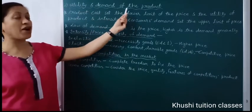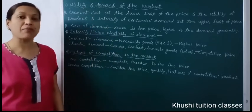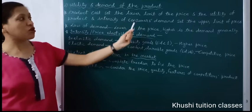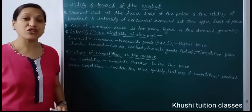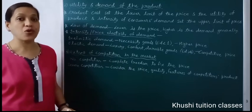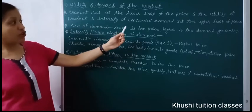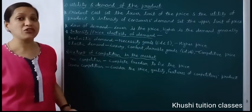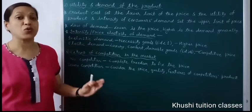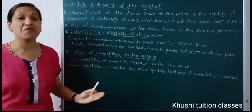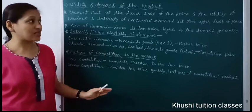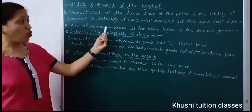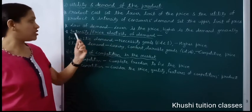The second factor is utility and demand of the product. Product cost sets the lower limit of the price — जो भी हमारे product का cost of production होता है, उतना तो हमें कम से कम charge करना ही होगा, otherwise firm loss में चले जाएगी। The utility of product and intensity of consumer's demand set the upper limit of the price — यदि utility और satisfaction ज़्यादा है, consumers की intensity of demand ज़्यादा है, तो हम price ज़्यादा charge कर सकते हैं। Law of demand: lower is the price, higher is the demand.